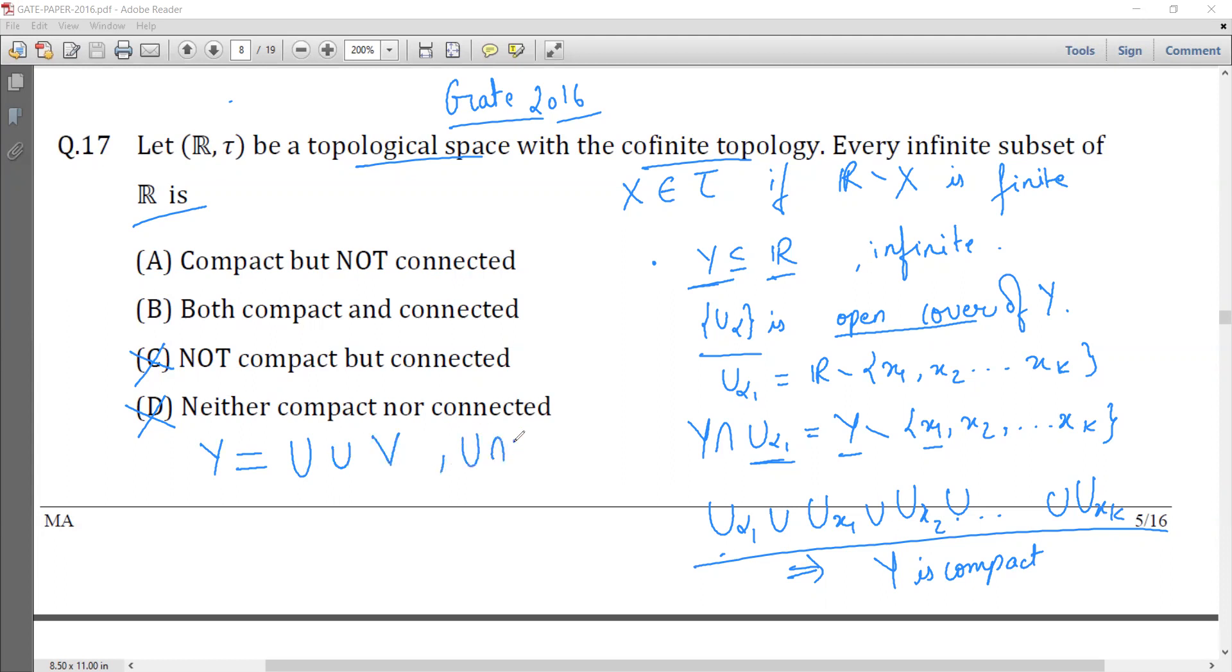Such that U intersection V is empty and U union V equals Y. But since U and V are infinite sets, their complements in R are finite, which leads to a contradiction. Thus we cannot write Y as a union of two disjoint open sets.